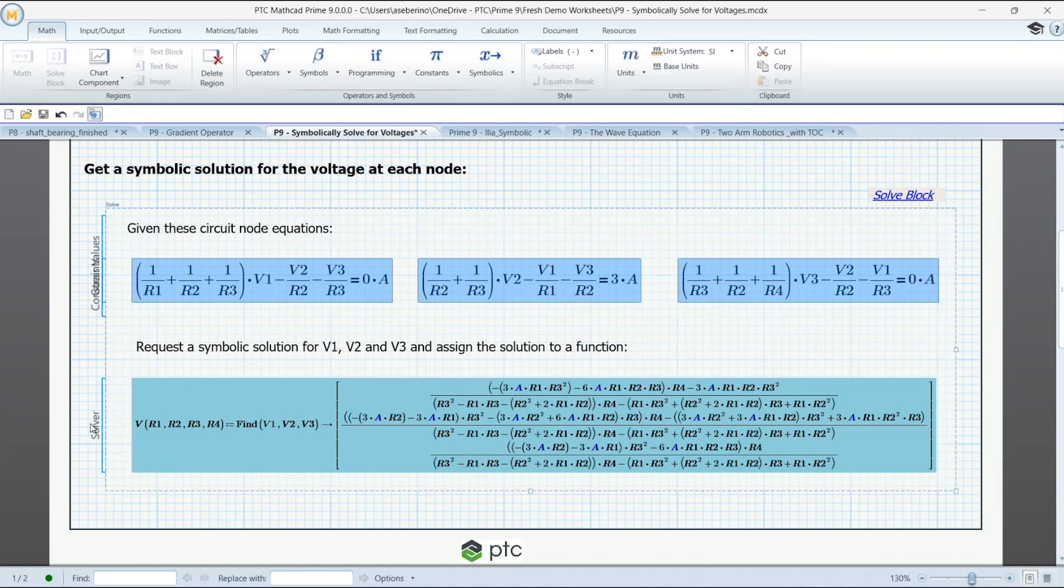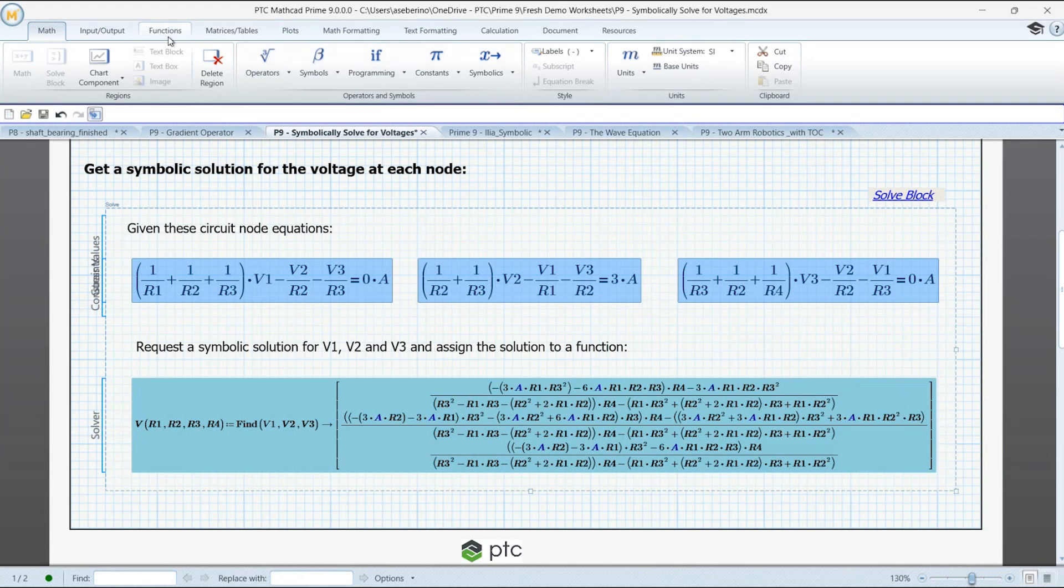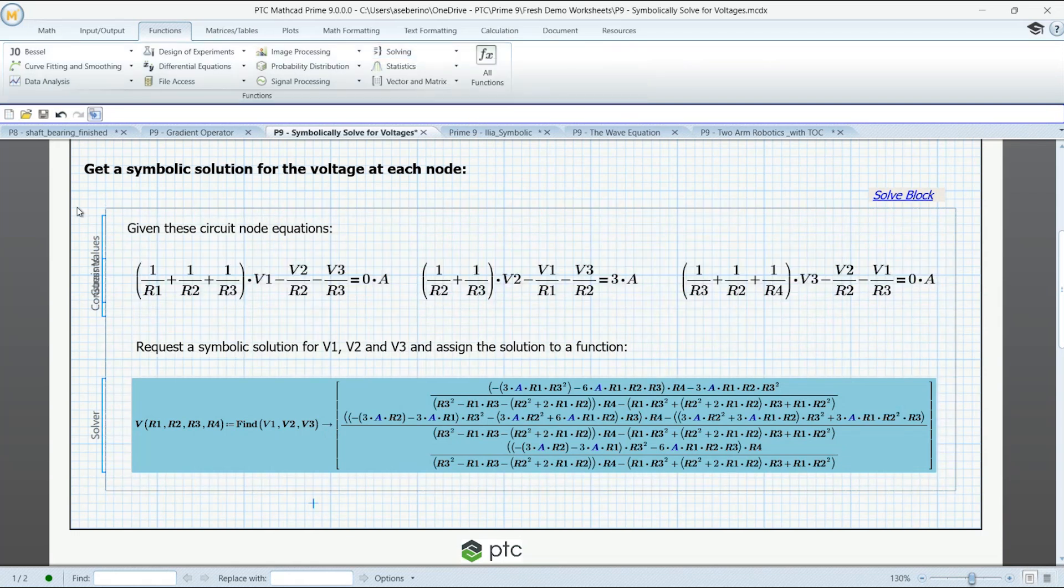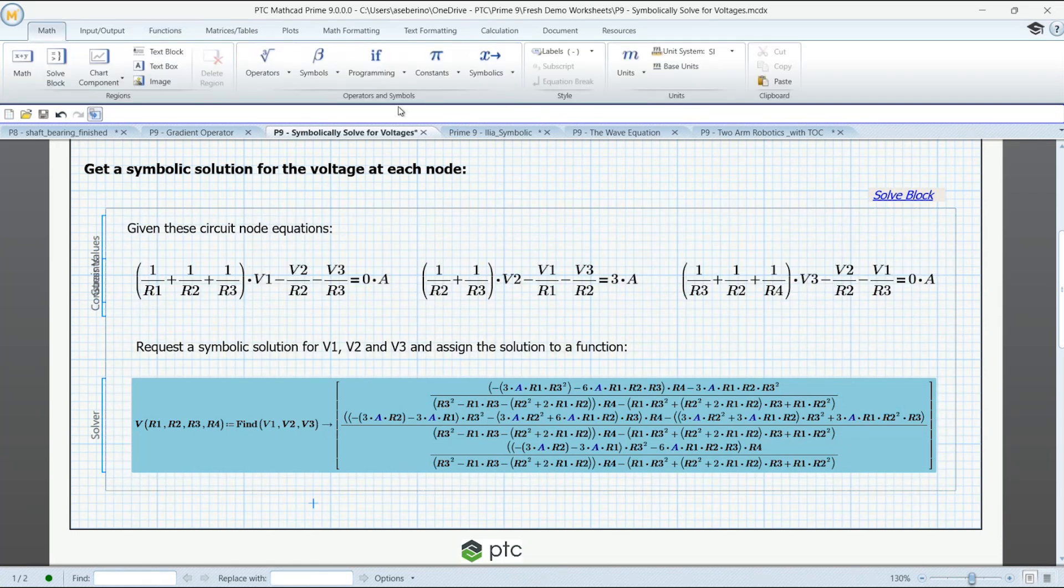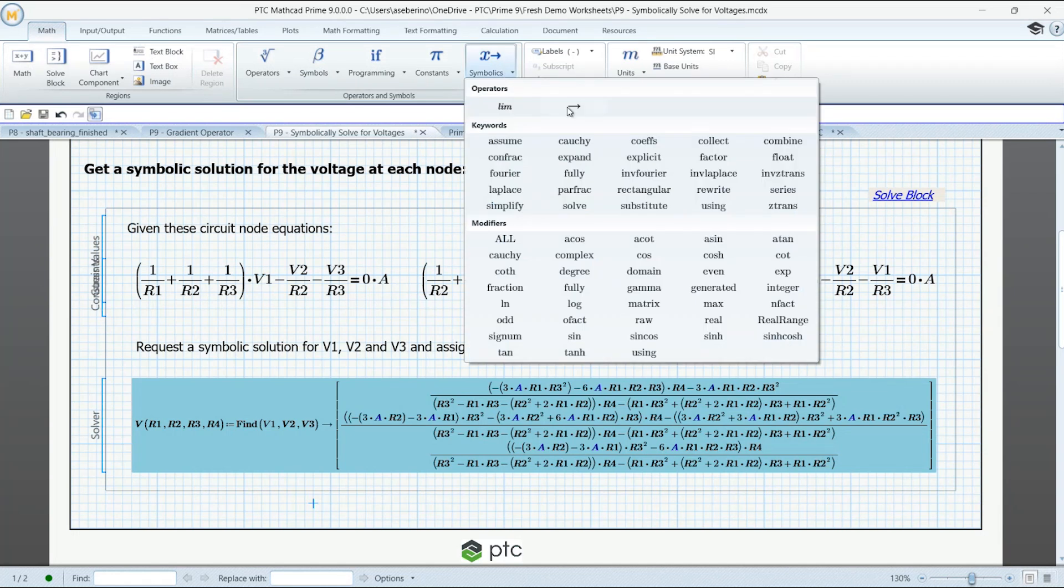Then in the solver section, instead of using one of those functions that we just looked at, instead of using one of these functions, we're actually going to use this arrow that points to the right. That's how we ask for a symbolic solution in Mathcad. And I'll show you where that is. It's over here on the Math tab. And if we go over here to the symbolics, it's right here.